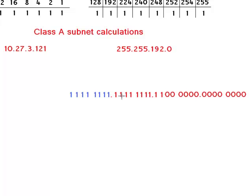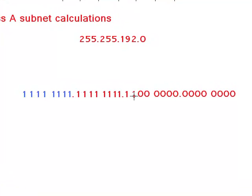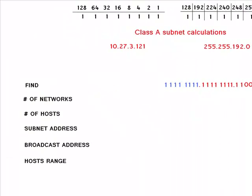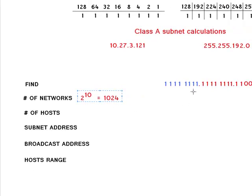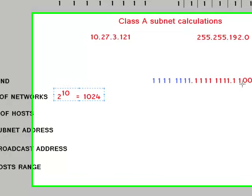So we count in 1, 2, 3, 4, 5, 6, 7, 8, 9, 10. So I have 10 ones, which means number of networks is 2 to the power of 10, which gives us 1024. So this is our number of networks, 1024, because the number of ones is 10.